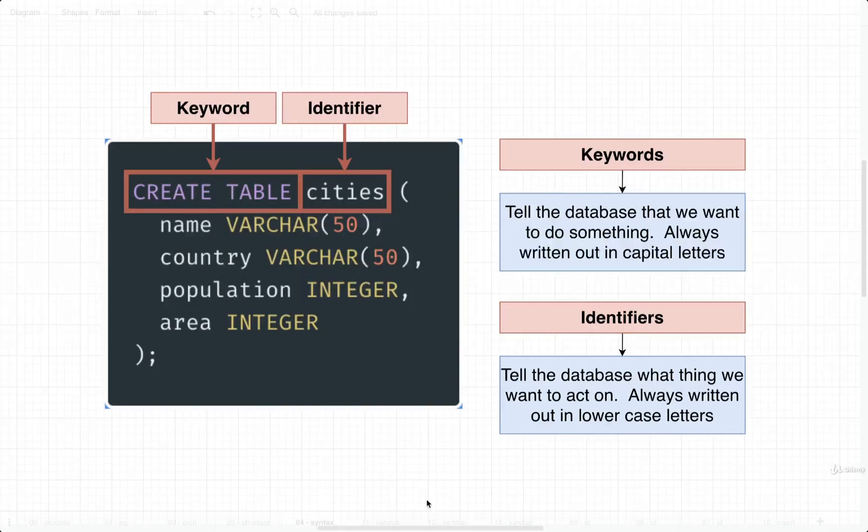Alright, so a couple of quick diagrams. This SQL statement consists of different words. Some words are what we refer to as keywords, others are identifiers. Keywords are very special words inside of SQL that tell the database that we want to do a very specific thing or designate some particular option.